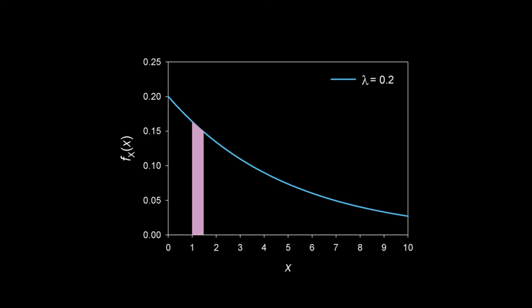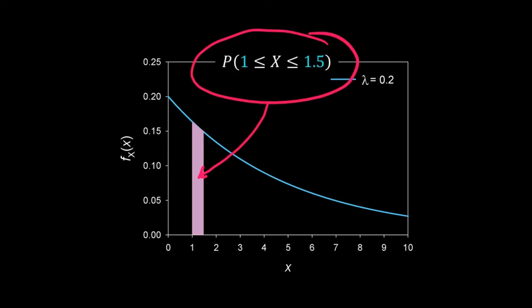The blue line here is the graphical representation of our calculation. The blue line is the PDF and the pink area is the probability that X is between 1 and 1.5. Just to remind you: the PDF is not the probability — the area under the PDF curve is the probability.